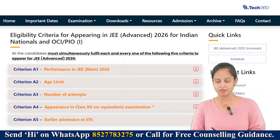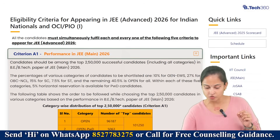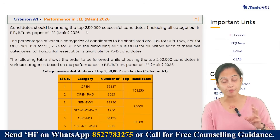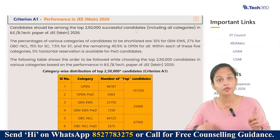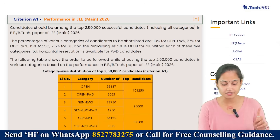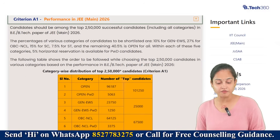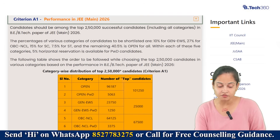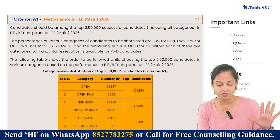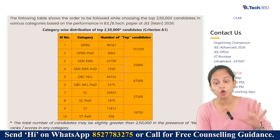Criteria number one is performance in JEE Mains 2026. Candidates should be among the top 2 lakh 50,000 successful candidates including all categories in the BE or BTech paper of JEE Mains 2026. The category-wise percentage breakdown is: 10% for General EWS, 27% for OBC NCL, 15% for SC, 7.5% for ST, and the remaining 40.5% is open for all. Within each of these five categories, 5% horizontal reservation is available for PwD candidates.